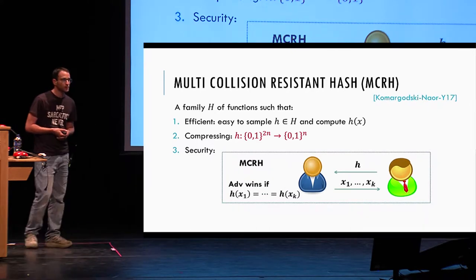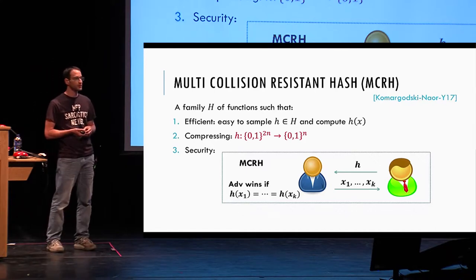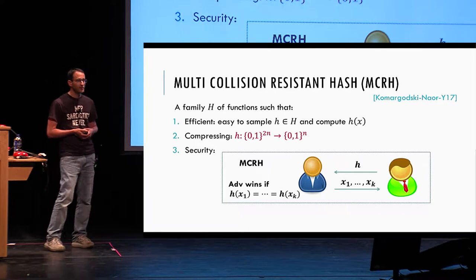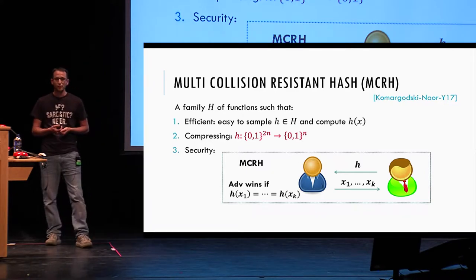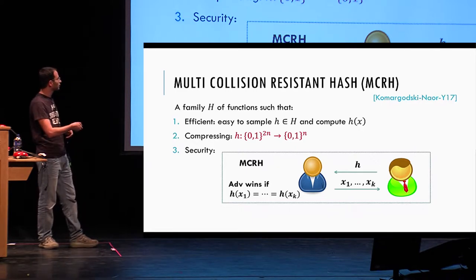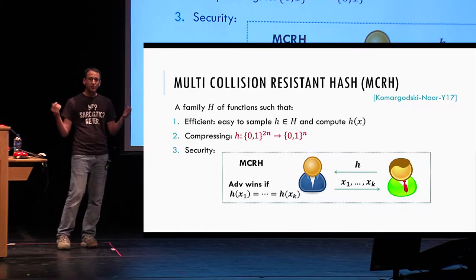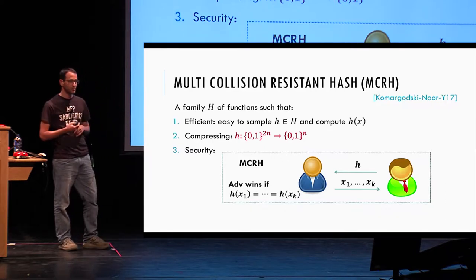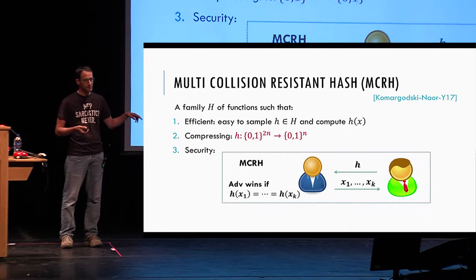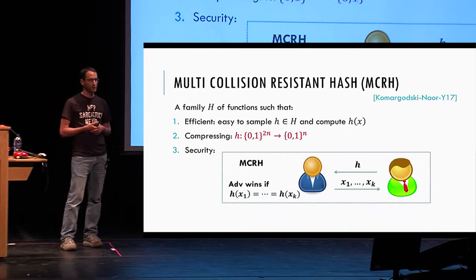In a recent work with Komargotsky and Naor, we introduced the notion of multi-collision resistant hash. Here the setting is the same, except the adversary's task is to find a k-way collision: a tuple x1 to xk that are all distinct but hash to the same value. So these are not k pairs that collide — these are k distinct elements that have the same value under the hash function.